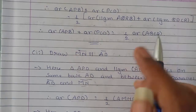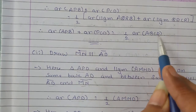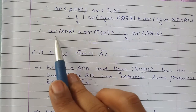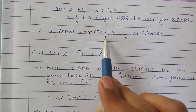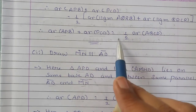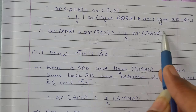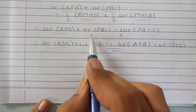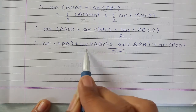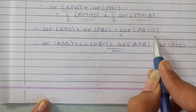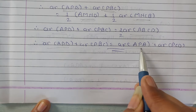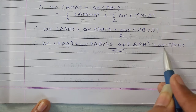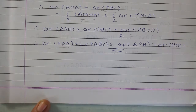Lekin we have already found out that half the area of ABCD equals area of APB plus area of PCD. To hum half area of ABCD ki jagah pe ye put kar denge. So, here we have area of APD plus area of PBC, aur iski jagah pe area of APB plus area of PCD — yahi to hum prove kar rahe the. Got it?